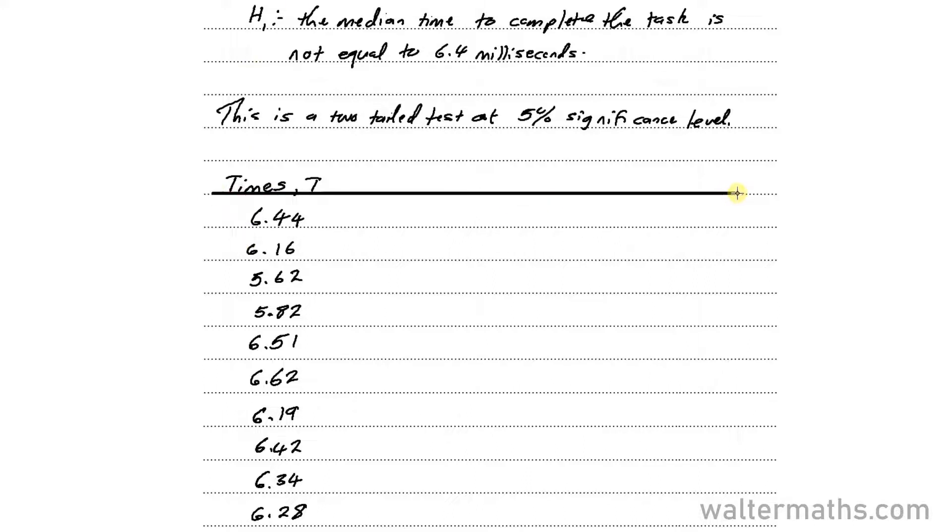So I'll be making a table here. For the next column, I'll write the differences of these data points with the median, which is 6.4. So I'll be subtracting 6.4 from each of the values. So here, that's going to be 6.44 minus 6.4, which is 0.04. 6.16 minus 6.4, that's minus 0.24.